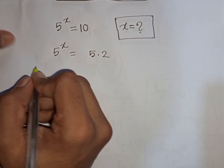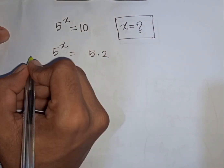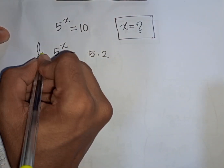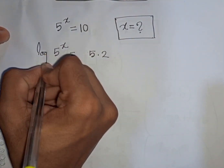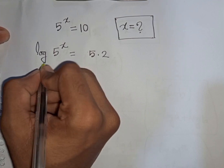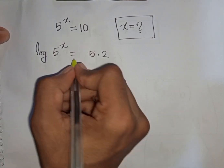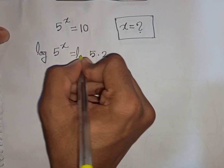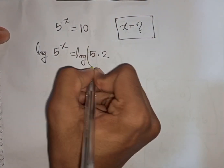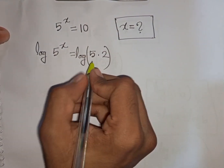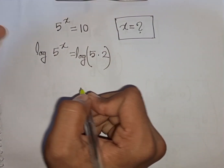Now we apply log on both sides. Log of 5 power x is equal to log of 5 times 2.